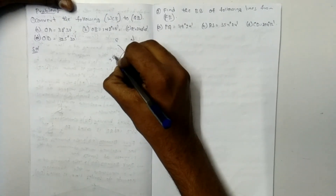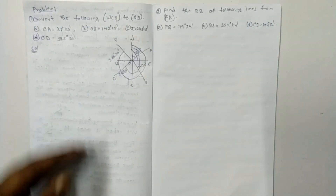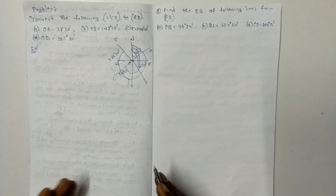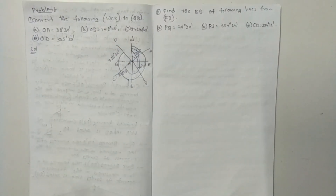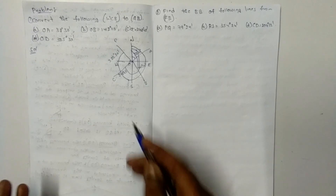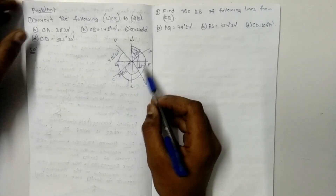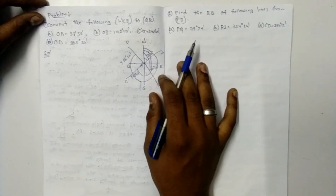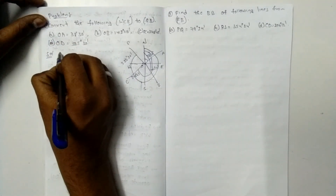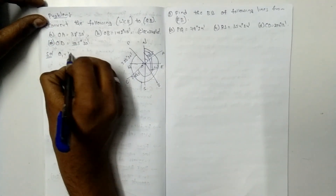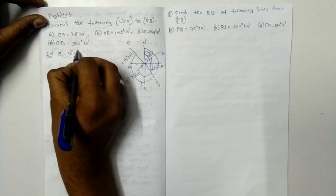OD = 325 degrees 30 minutes. Now we make a diagram. Theta 1 equals 38 degrees 30 minutes. Since 38°30' is in the first quadrant, between 0 and 90 degrees, it lies in the north-east direction.